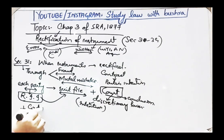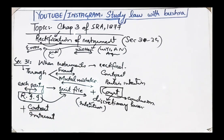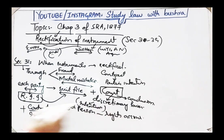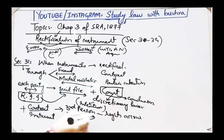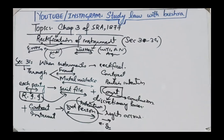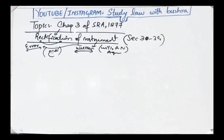However, the section also provides: 'so far as this can be done without prejudice to the rights acquired by third persons in good faith and for value.' This means if a third person's rights have accrued under that contract and they were unaware of the fraud or mutual mistake and contracted in good faith, the court will not go against that third person's rights and will not rectify the contract against them.